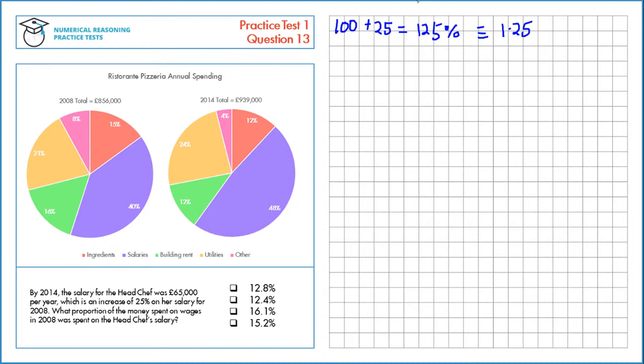So if we want to get back to the 2008 number, we divide by 125%. So 65,000 divided by 1.25 equals 52,000. That's the 2008 salary.